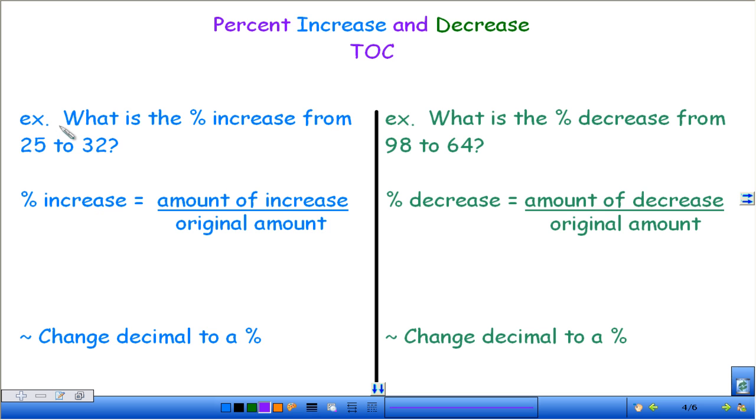So the first example, in blue I have an example of percent increase, and then in the green I have a percent decrease example. So we'll do a couple together, and then I'll have you guys start kind of going on your own, because I think this is pretty simple. So the first one, when you guys go ahead and write this down as an example, just put 25 to 32, you don't have to write the whole thing.